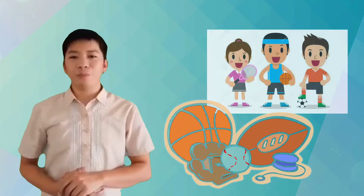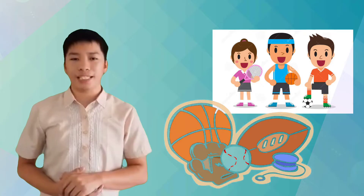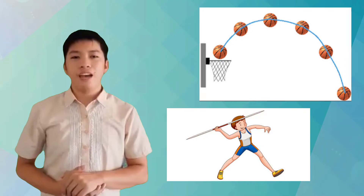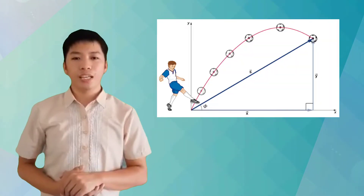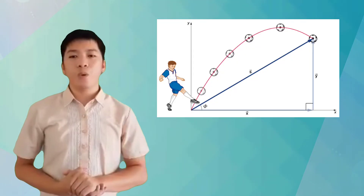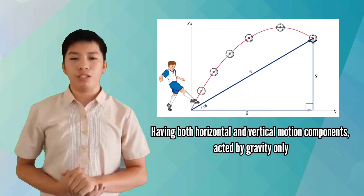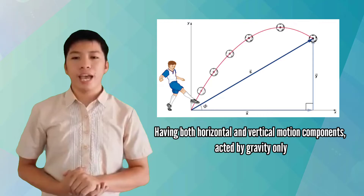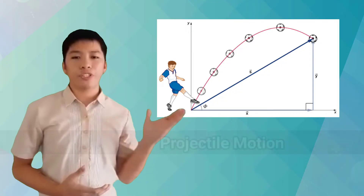Many of the games you play and the sporting events you join or appreciate during PE classes involve playing objects or balls. Have you noticed the curved paths they make in mid-air? This curve is what naturally happens when an object called a projectile moves in two dimensions, having both horizontal and vertical motion components acted by gravity only. In physics, this is called projectile motion.